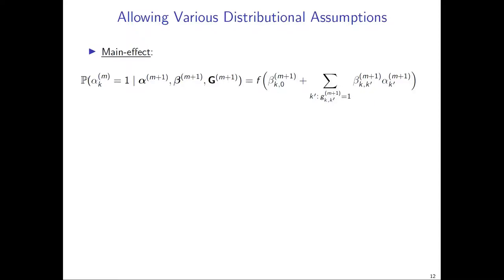Our conditions are imposed on the true unknown structures. As long as the true unknown structures satisfy the conditions, we can identify them — meaning no alternative different structure can lead to the same observed distribution.